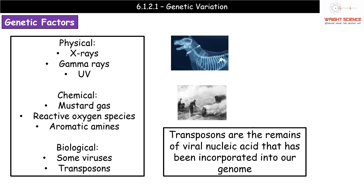In terms of examples of mutagens, the physical ones will be familiar from GCSE physics: X-rays, gamma rays, and ultraviolet. X-rays are why hospitals ask how many you've had, gamma rays are something we should limit exposure to, and UV explains why people who spend a lot of time in the sun or on sunbeds are more likely to develop skin cancers, having increased their exposure to ultraviolet radiation and therefore the risk of mutations.